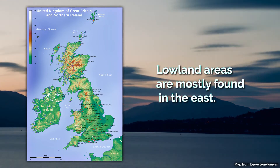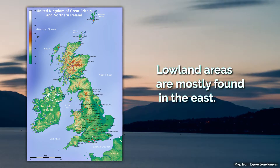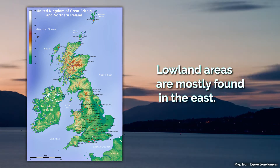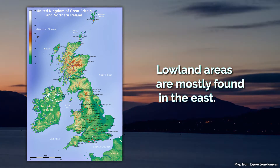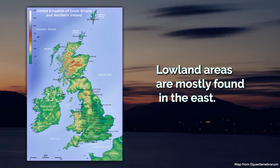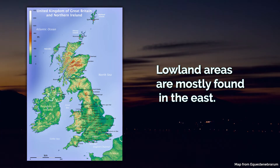The east is home to many of the lowland areas of the UK, including much of the Midlands and Lincolnshire, and parts of East Anglia including the Fens, which is the lowest part of the UK.